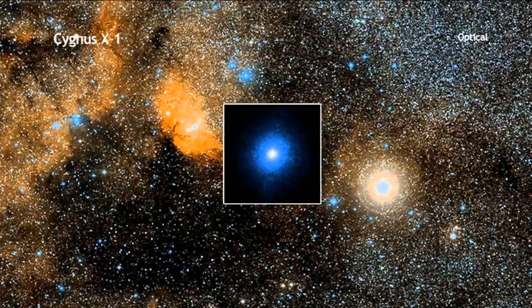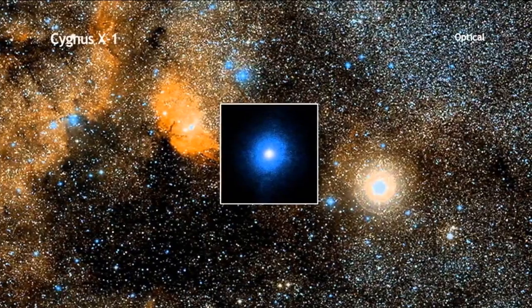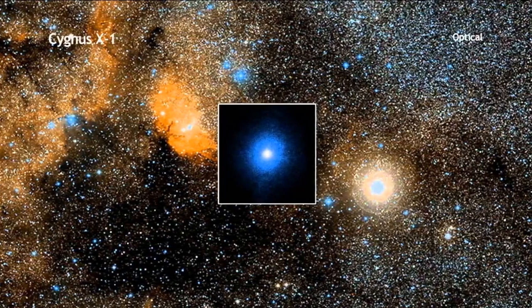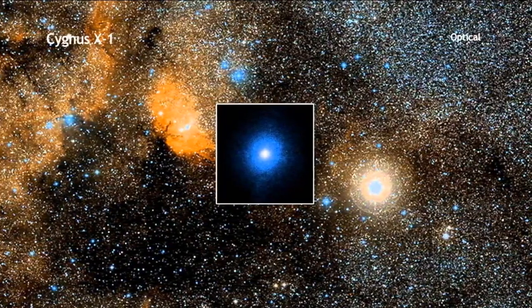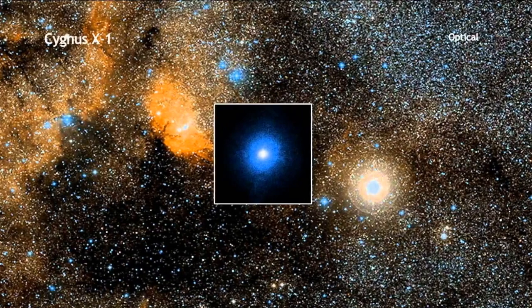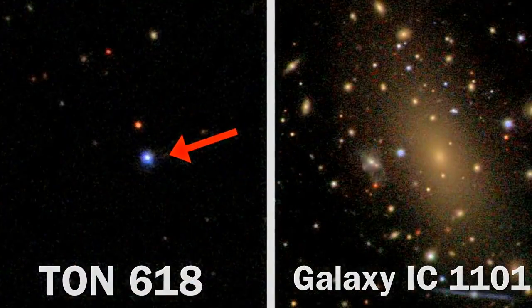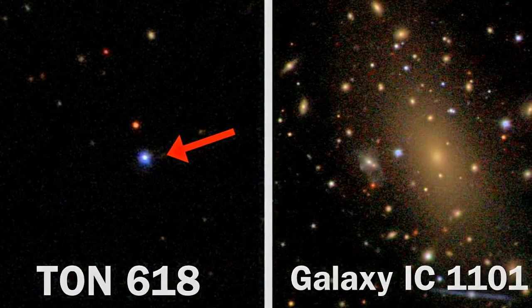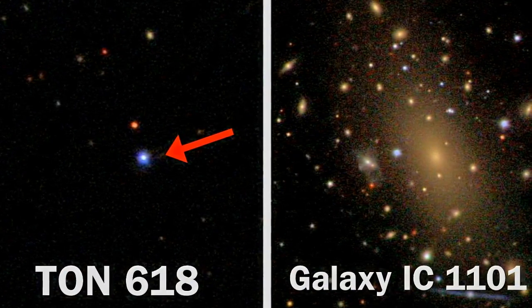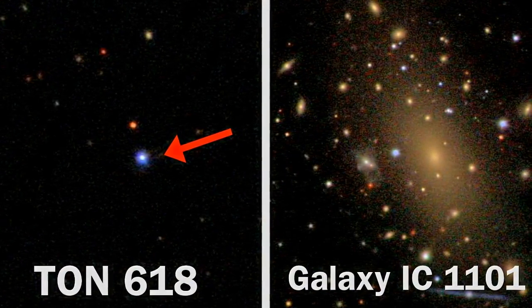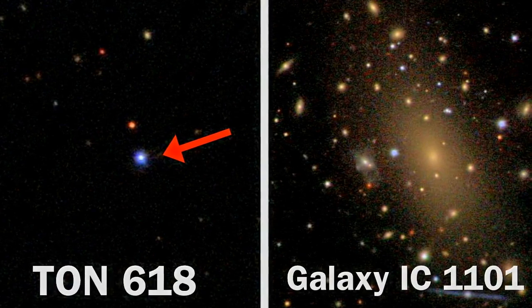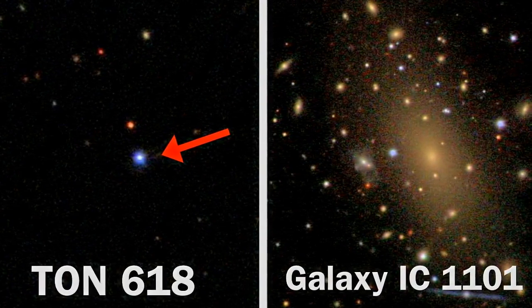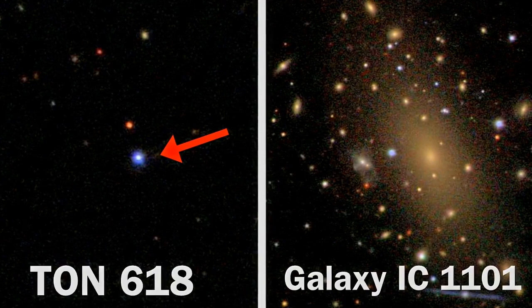While Cygnus X-1 commands attention in our cosmic neighborhood, it stands in humble comparison to the colossal entities that reign supreme in the cosmic hierarchy. Quasar T-618, flaunting an estimated 66 to 70 billion solar masses, and the central black hole of galaxy IC 1101, boasting around 40 billion solar masses, loom as true titans in the cosmic tapestry.